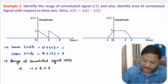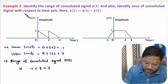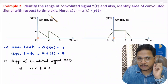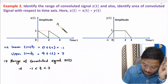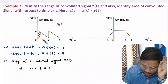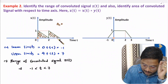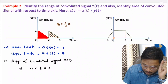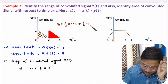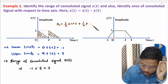Now I will explain the area covered by the convoluted signal with respect to the time axis. The area covered by X(t) is A1. A1 consists of two triangles: half of 1 times 2, plus half of 1 times 2, giving 1 plus 1, which equals 2.